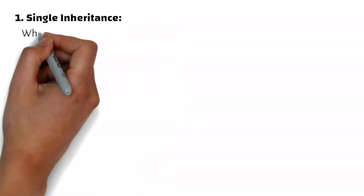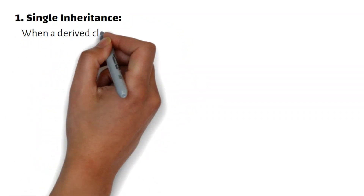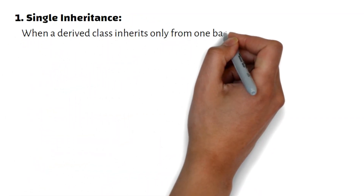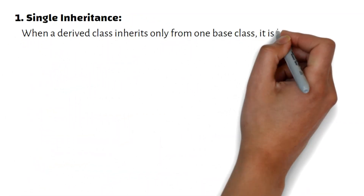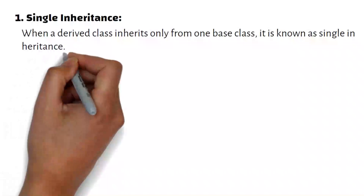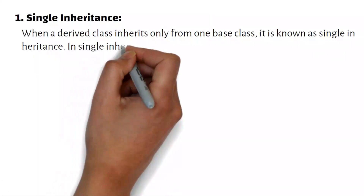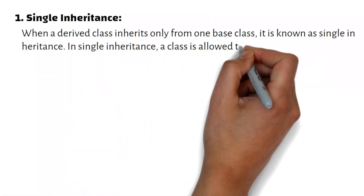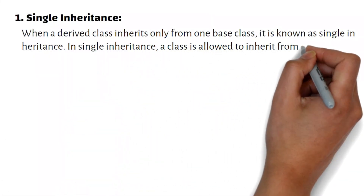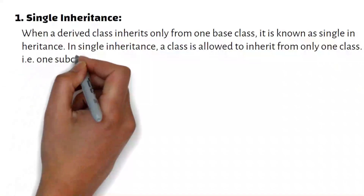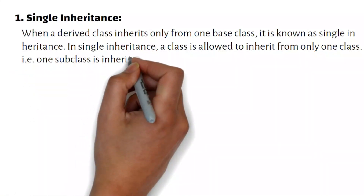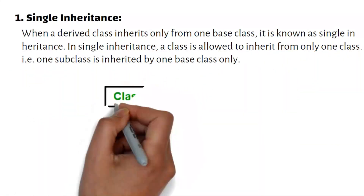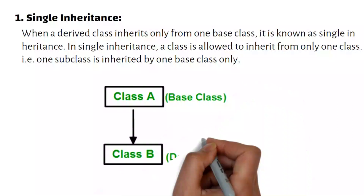Single inheritance: when a derived class inherits only from one base class, it is known as single inheritance. In single inheritance, a class is allowed to inherit from only one class, i.e., one subclass is inherited by one base class only.